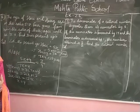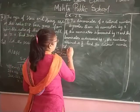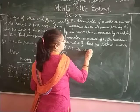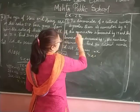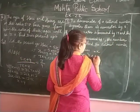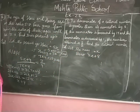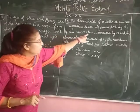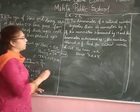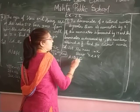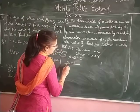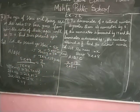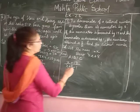Let the numerator be equal to x. Then the denominator is greater than its numerator by 8, so the denominator is x plus 8. According to the question condition, if the numerator is increased by 17 and the denominator is decreased by 1, the number obtained is equal to 3 upon 2.